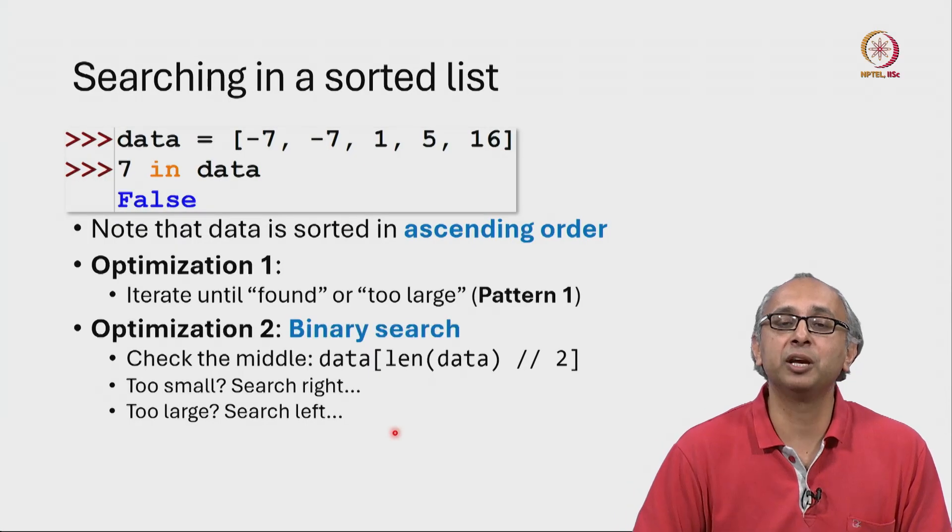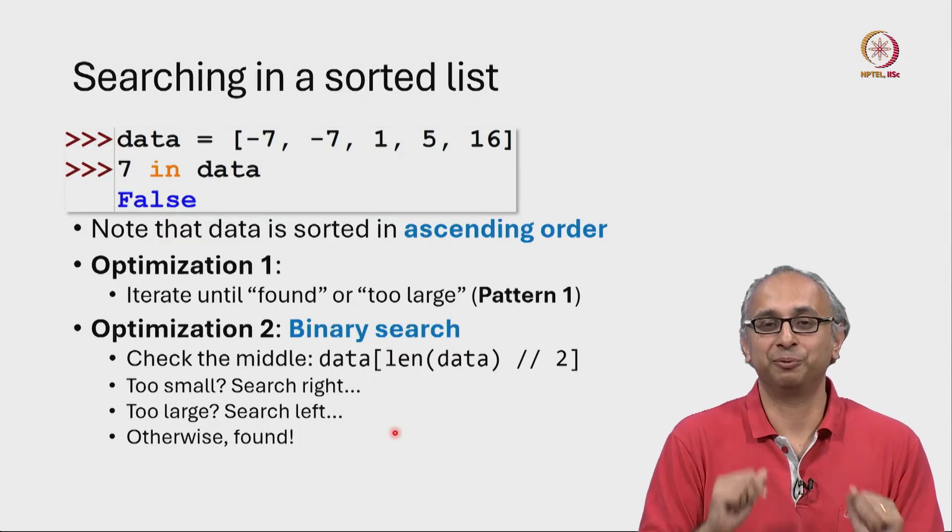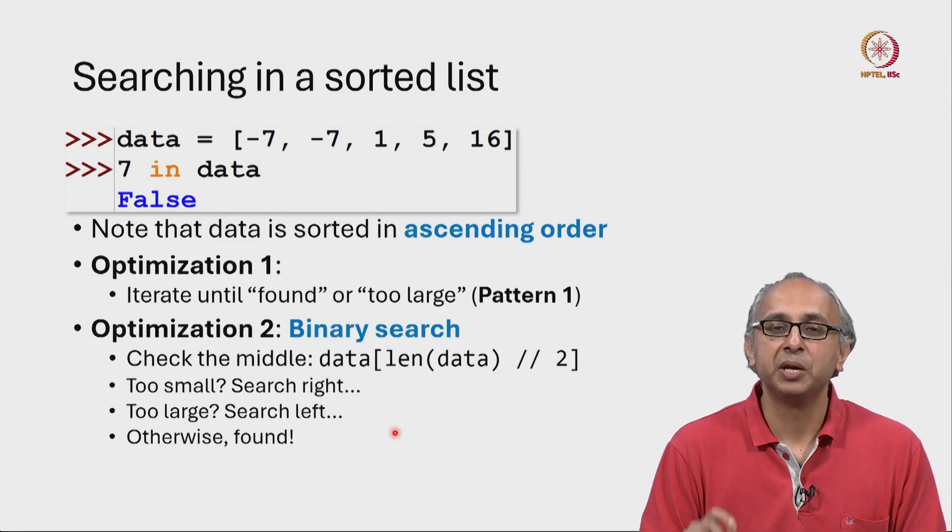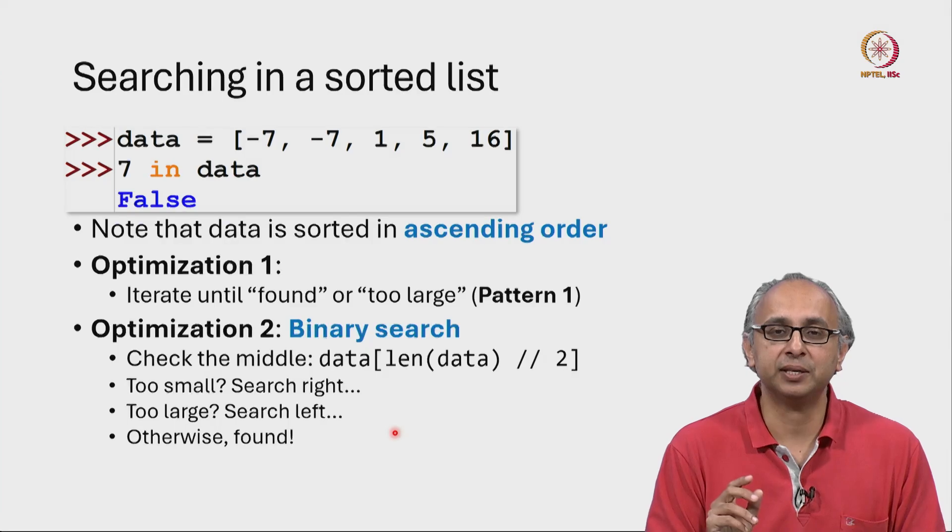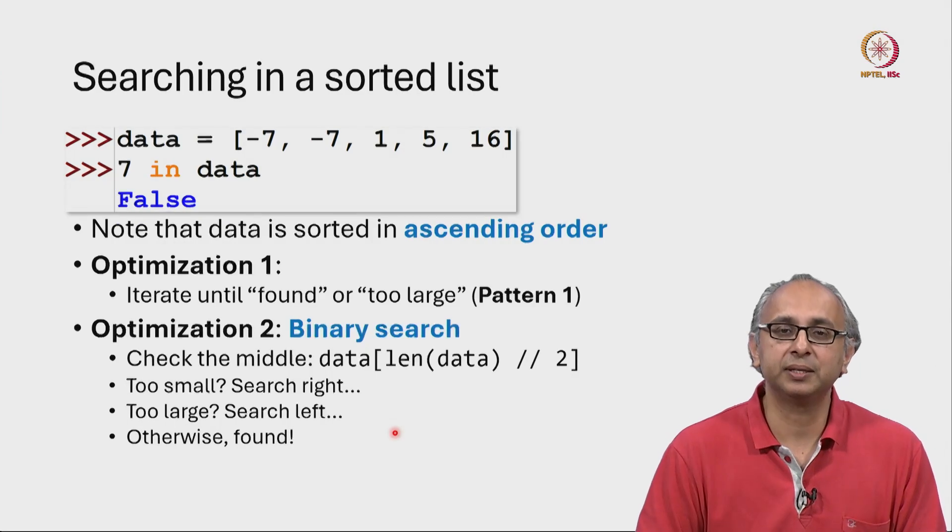And of course, if we are looking for 1 itself, then we have found what we want. So this idea is called binary search, and to implement it, we need a while loop.